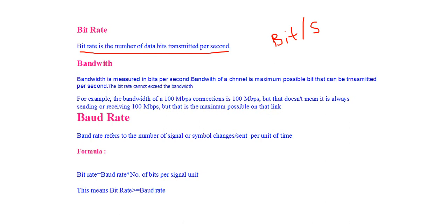Now, what is baud rate? Baud rate refers to the number of signal or symbol changes sent per unit of time. In a channel, the rate of signal changes per unit of time is called baud rate. In each signal there can be a variable number of bits — there can be 4 bits or 8 bits.